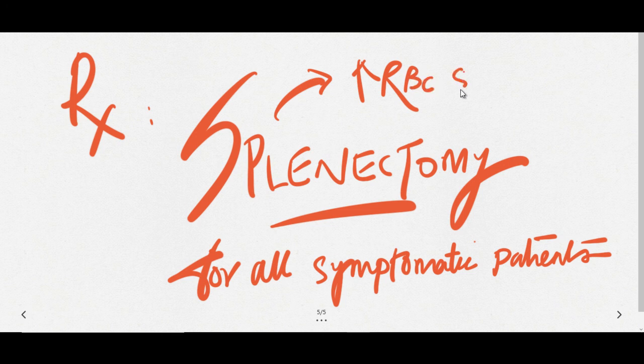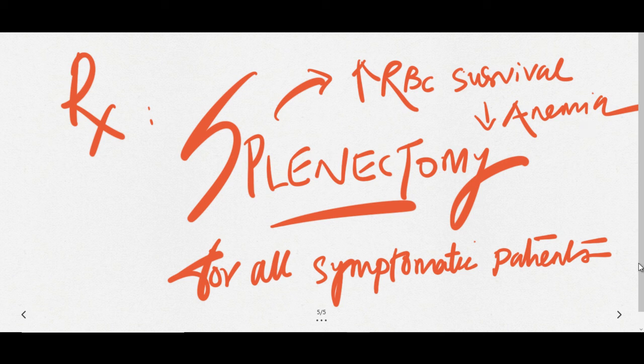Splenectomy will ultimately increase RBC survival and decrease anemia. But when is splenectomy contraindicated in hereditary spherocytosis?